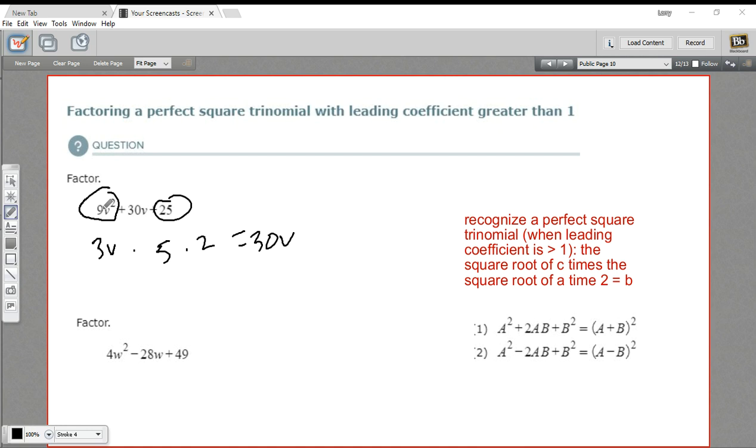So that is the pattern. The square root of this term, the square root of this term multiplied together and then multiplied by 2 is the middle term. That's a perfect square trinomial.